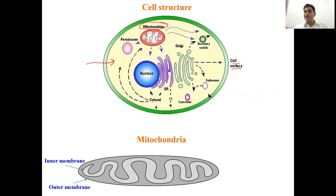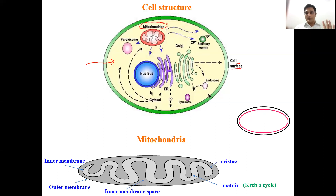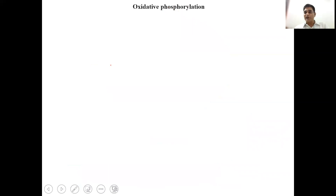The previous step — the Krebs cycle — took place in the matrix. Oxidative phosphorylation takes place on the inner wall of the mitochondria. Because ATP synthesis happens here in aerobic organisms, the mitochondria is called the powerhouse of the cell. The inner membrane forms the cristae, with the matrix inside and the inner membrane space between the two membranes.